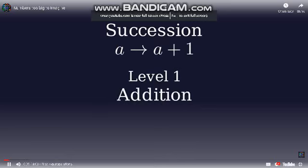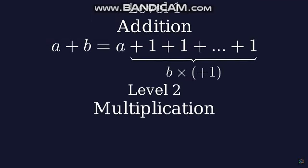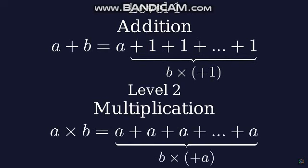The most basic arithmetic operation is succession. Succession is just adding one to a number. The level above is addition. Addition is repeated succession. A plus B is equal to adding one, B times. Then we have multiplication. Multiplication is repeated addition. A times B is equal to adding A to itself, B times.